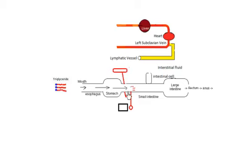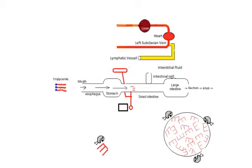The pancreatic juice contains lipase. Bile is made by the liver, stored in the gallbladder, and then released into the small intestine — specifically the first part, which is the duodenum. In the duodenum, digestion of the lipids will begin.